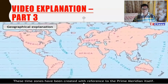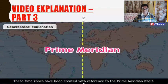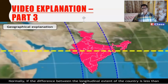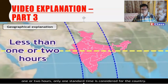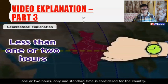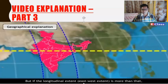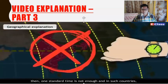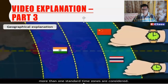With respect to businesses at a global level, there should be compatibility between the standard times of various countries. To facilitate this, the world has been divided into 24 time zones, created with reference to the prime meridian. Normally, if the longitudinal extent of a country is less than one or two hours, only one standard time is considered. But if the east-west extent is more than that, more than one standard time zone is considered for that country.